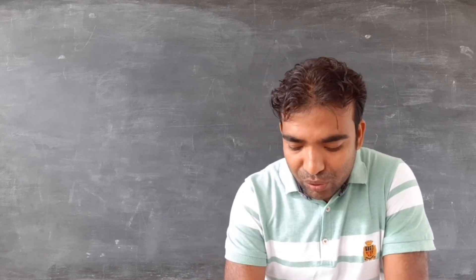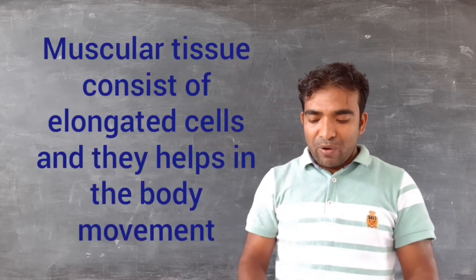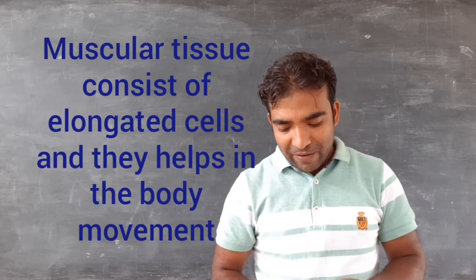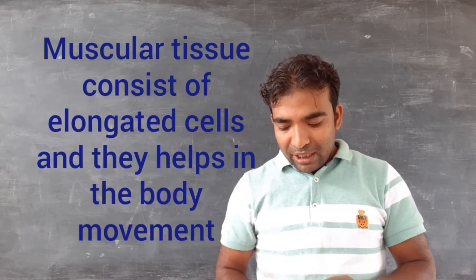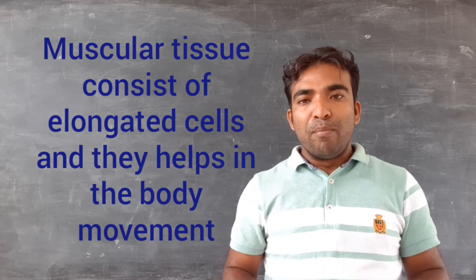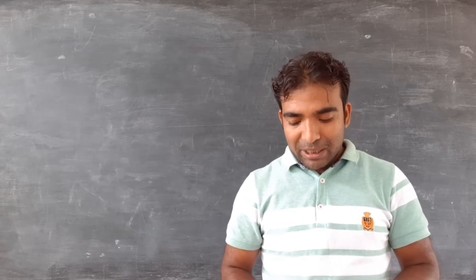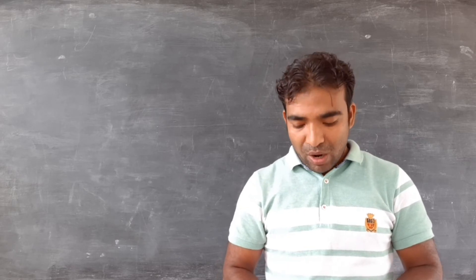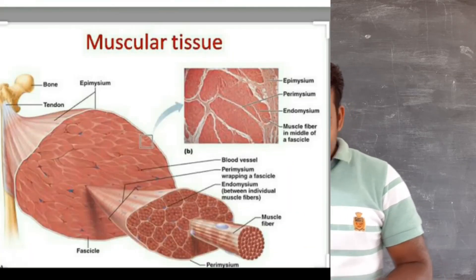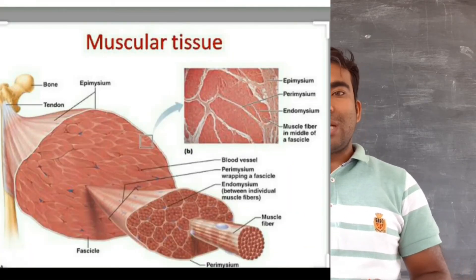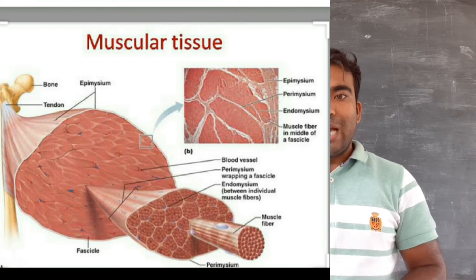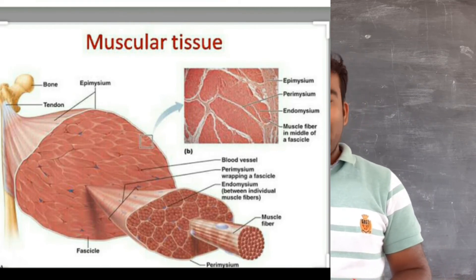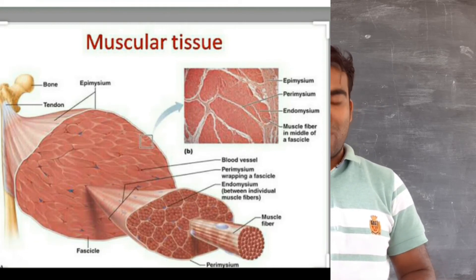Now we will discuss about muscular tissue. Muscular tissue consists of elongated cells, also called muscle fibers, and this tissue is responsible for movement in our body. Muscles contain a special protein called contractile protein, which is responsible for contraction and relaxation of the muscles, and due to this our body can move.